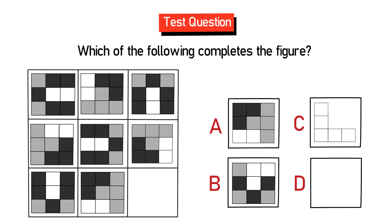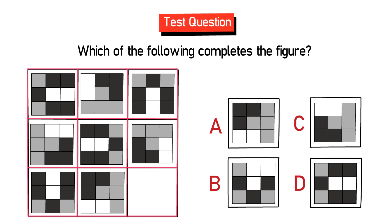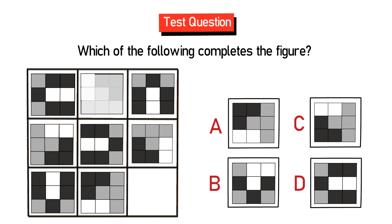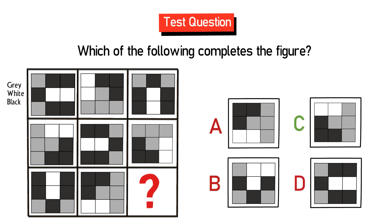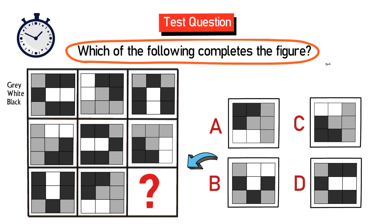I wanted to share with you a cool question which has started showing up on tests very recently. You are presented with a 3-by-3 matrix; each square of the matrix contains another 3-by-3 matrix inside with small squares in gray, white, and black. One 3-by-3 square is missing and you need to select from four possible choices — A, B, C, and D — to determine which shape completes the figure.